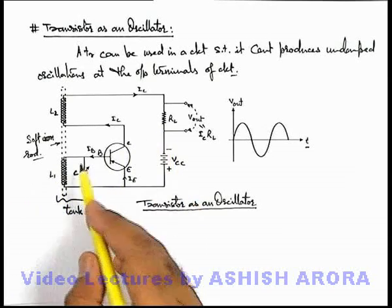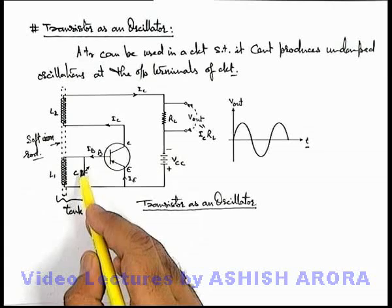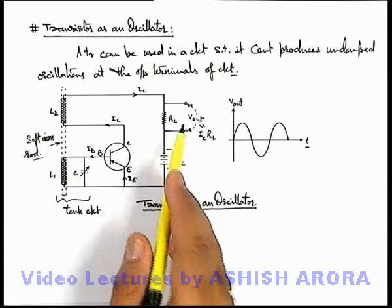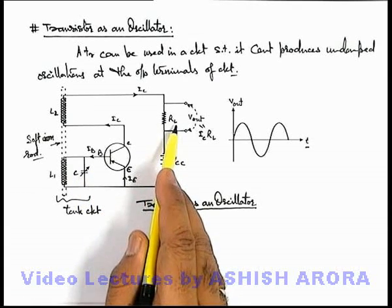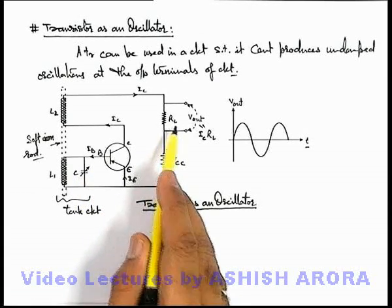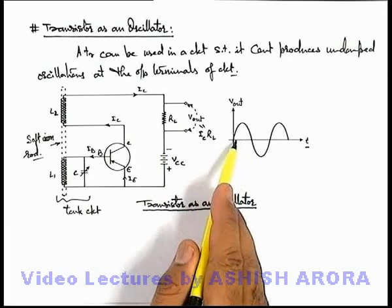The amplified output of these tank circuit oscillations will be available at the collector side across the load resistance, so we will get the output.